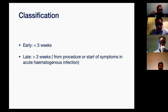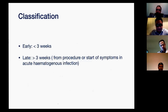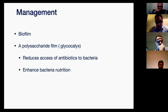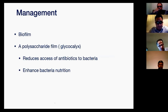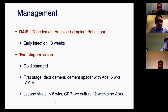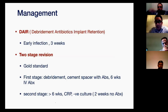Classifications: early infection is less than three to four weeks from the operation or onset of symptoms in hematogenous infection. For management, understand the concept of biofilm — a polysaccharide film that forms on the implant shortly after infection, reducing antibiotic access to bacteria and enhancing bacterial nutrition. Once biofilm is formed, the implant needs to come out. Management options include DAIR — debridement, antibiotics, and implant retention — which is an option for early infection less than three to four weeks. You perform thorough debridement, change modular components (i.e., exchange the polyethylene liner), and give antibiotics according to cultures.